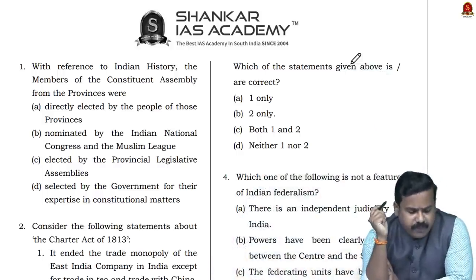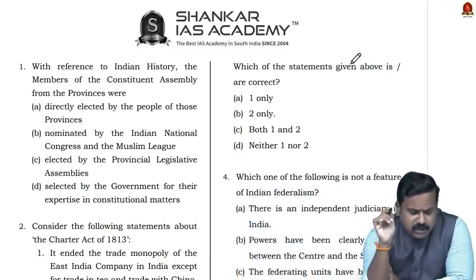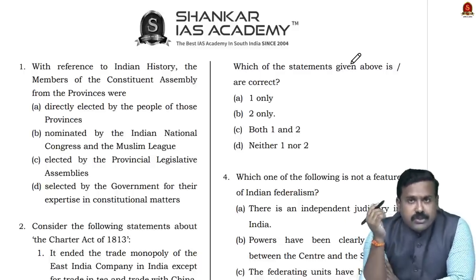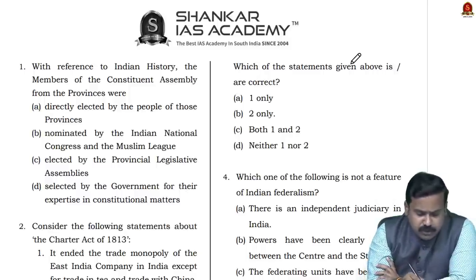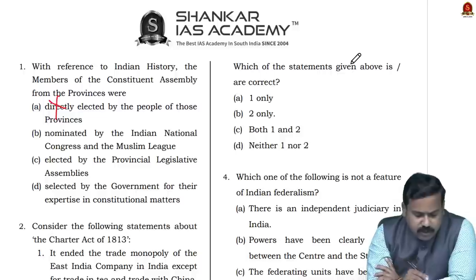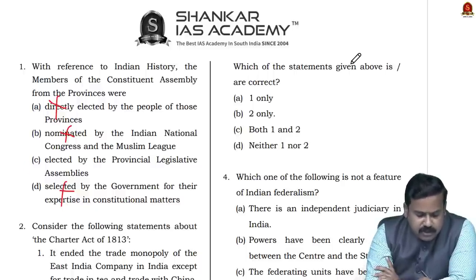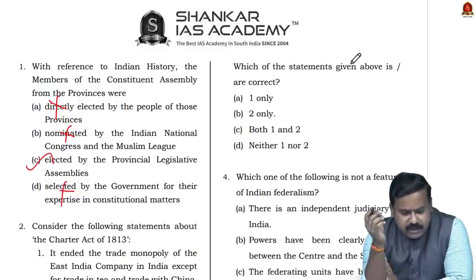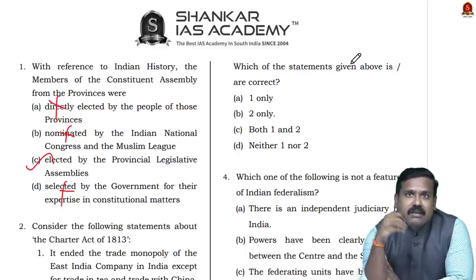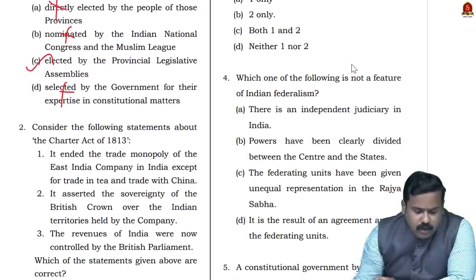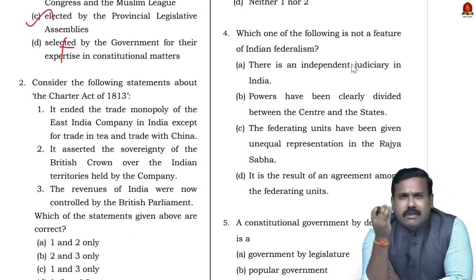The first question: With reference to Indian history, the members of the Constitutional Assembly from the provinces — how were they selected? They were not directly elected, not nominated, not selected. They were elected by the provincial legislative assemblies — kind of indirectly elected by the members of the legislative assemblies. This is a very simple, straightforward question, also taken from NCERT.